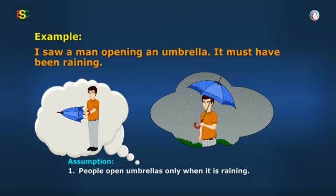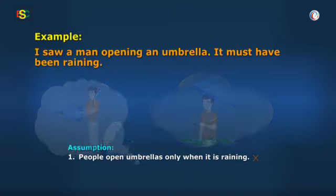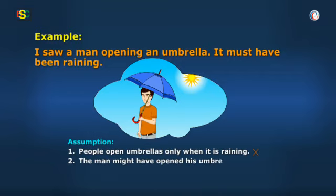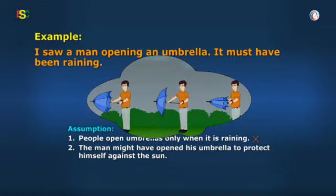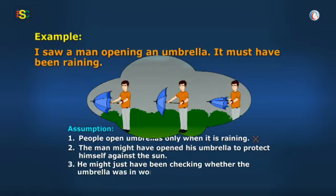But, Baba, this assumption is not good. The man might have opened his umbrella to protect himself against the sun, or he might just have been checking whether the umbrella was in working shape, or he might have done so with no good reason at all. In other words, the speaker assumes that people open their umbrellas only when it rains, but this assumption is not true as we just saw.